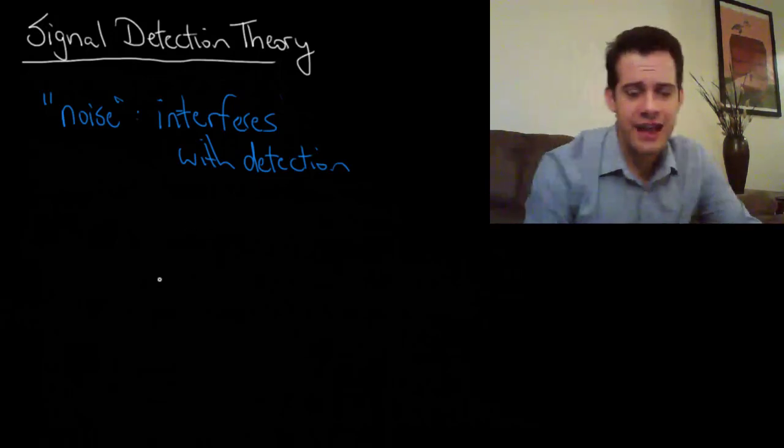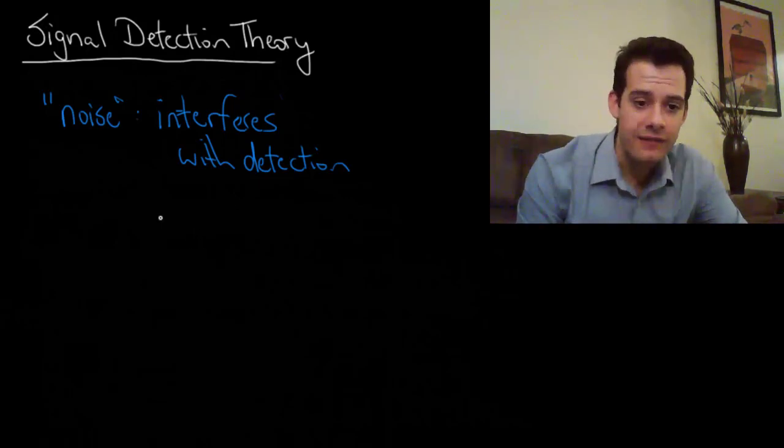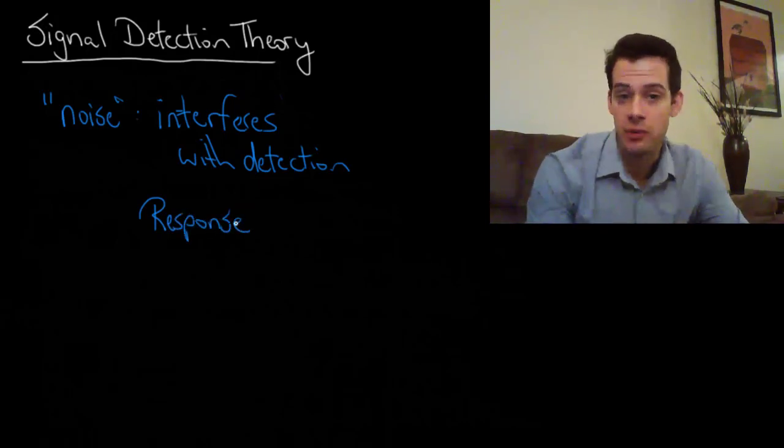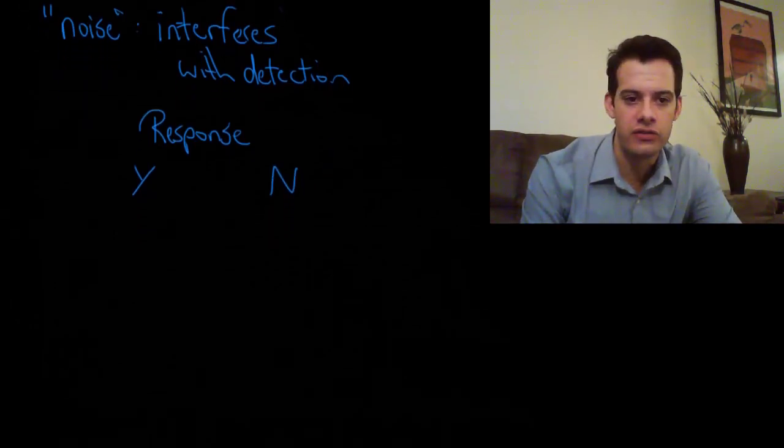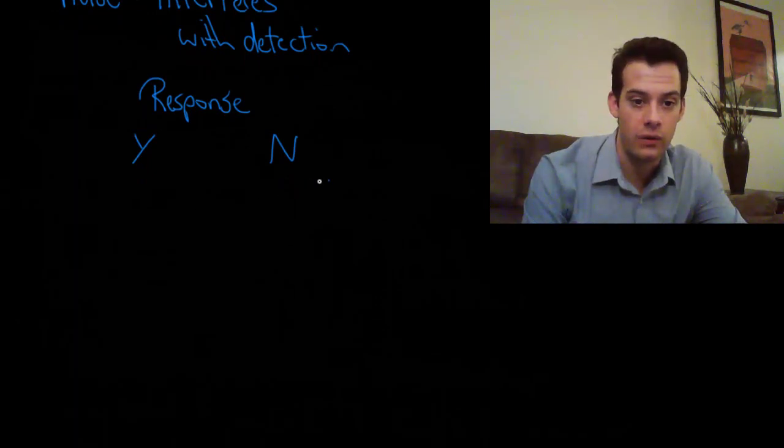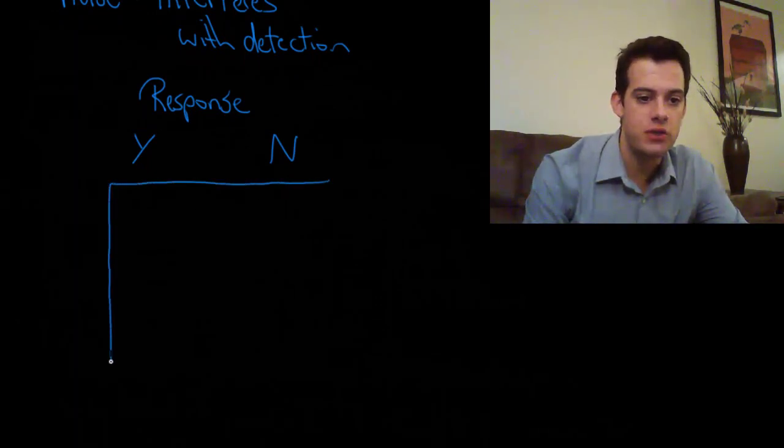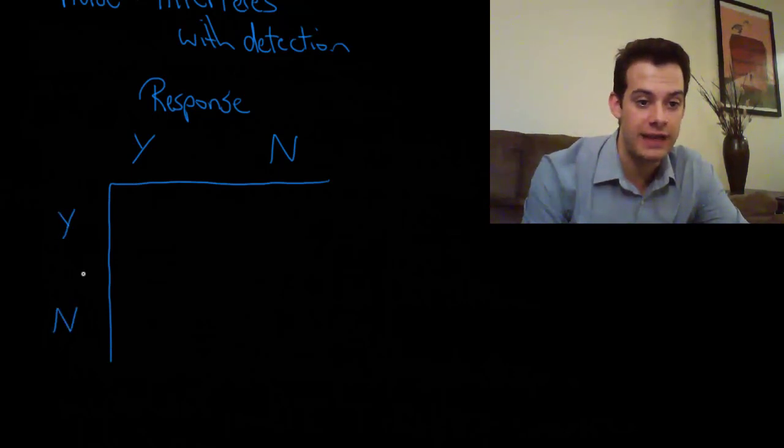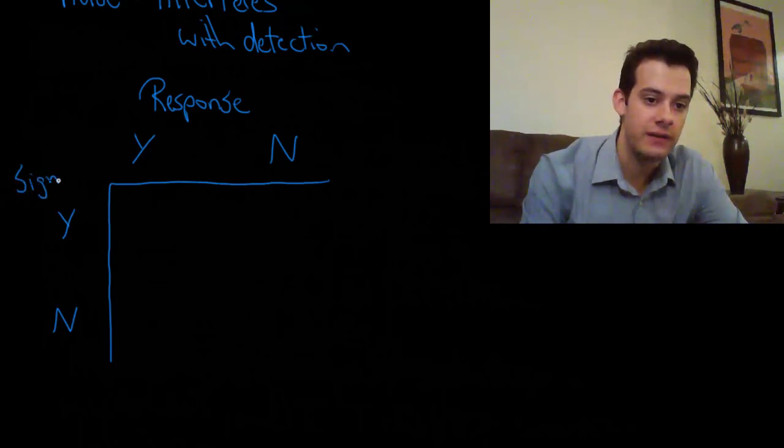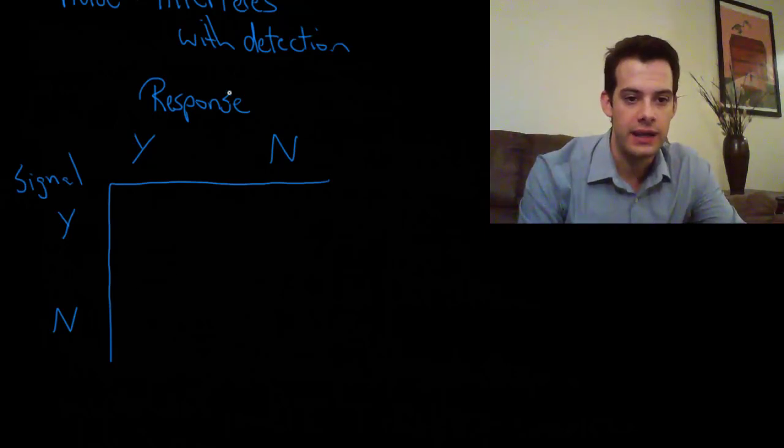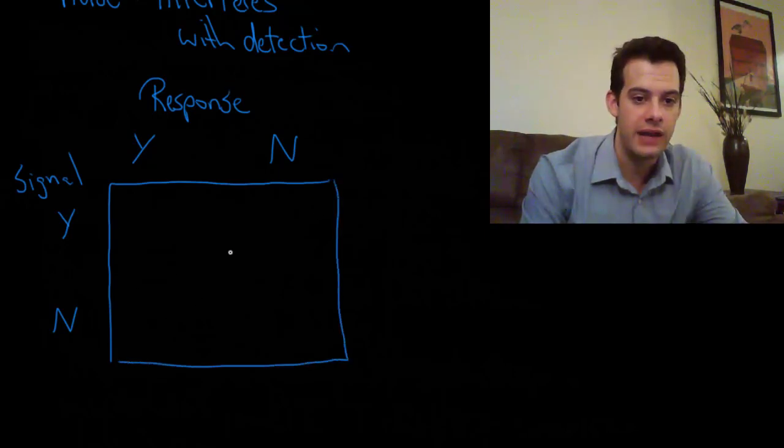In signal detection theory, what we look at is the possible outcomes. So we have your response. If we use the hearing example, let's say you put on some headphones, you're in a quiet room and I play a sound and you either tell me yes you can hear the sound or no you don't hear anything. So those are your two responses. You have to answer yes or no. Well there's also two possibilities on the side of the signal. Is there a signal, yes or no? Maybe I didn't play a sound. So over here we have the presence of a signal, yes or no. And we have your response, yes I hear it, no I don't. And this gives us this matrix of four possible outcomes.